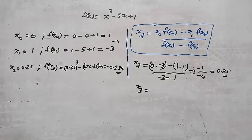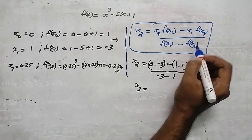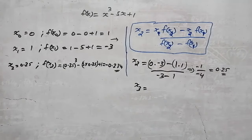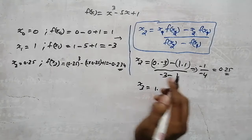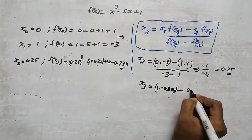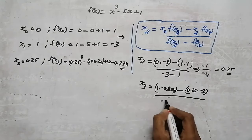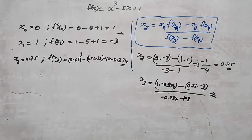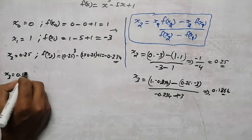Now we need to find x₃. We do a slight modification in our formula — wherever there is 0 we put 1, and wherever there is 1 we put 2. Substituting: x₁ is 1, f(x₂) is minus 0.234, x₂ is 0.25, f(x₁) is minus 3, all divided by f(x₂) minus f(x₁), which is minus 0.234 minus (minus 3). We get x₃ equal to 0.1864.